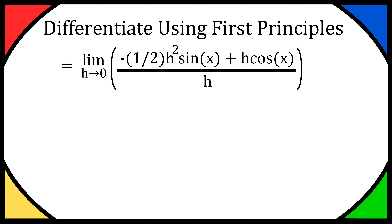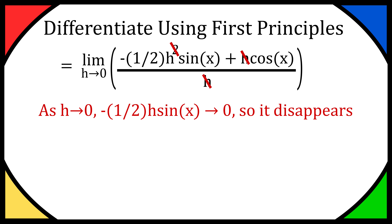So now we have minus half h squared sine(x) plus h cos(x), all over h. Since everything is divided by h, we divide both terms by h: the left term becomes minus half h times sine(x), and the right term is just cos(x). Now as h tends to 0, minus half h sine(x) tends to 0 because it's being multiplied by h, which is tending to 0. So that whole term disappears, leaving us with cos(x).